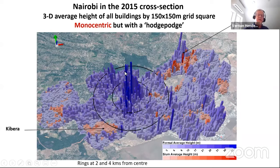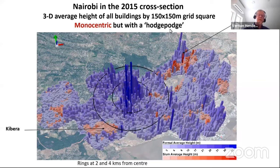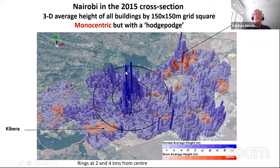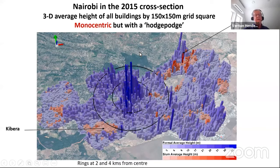The purple/blue areas are formal sector developments; the orange is informal sector development as mapped by an Indian firm that maps slums around the world. The more intense the color, the higher the buildings are — this shows building heights by 150-meter grid square average height. Even the average height in the center can be 43 meters, or about 14 stories.